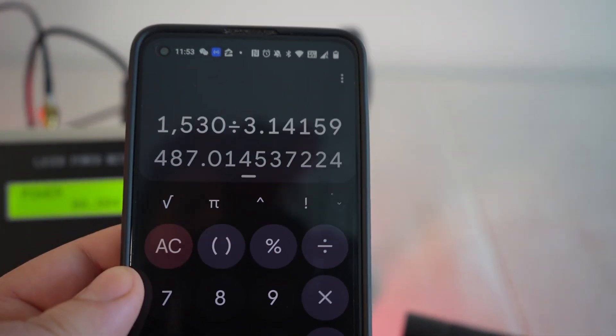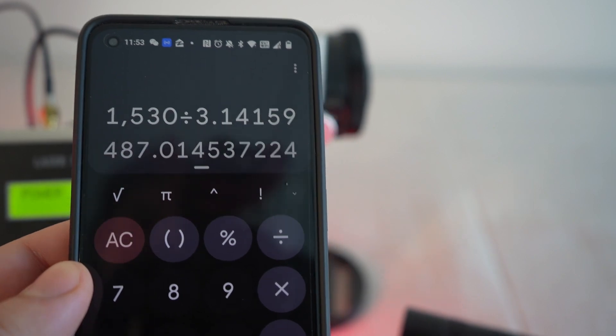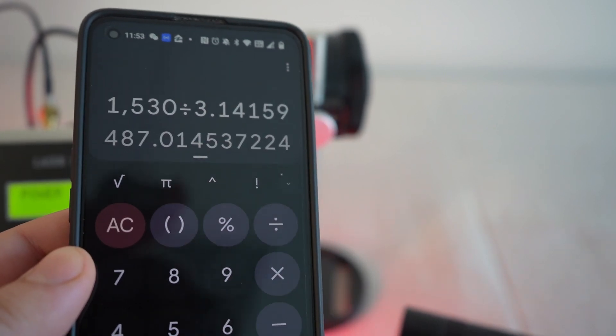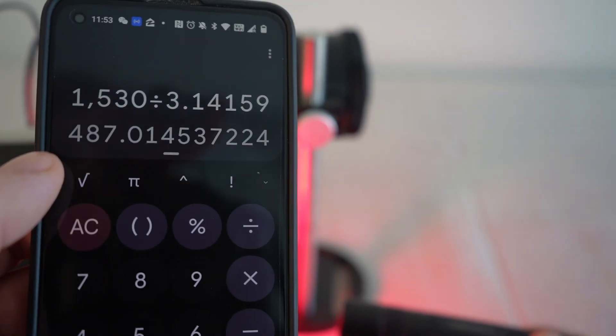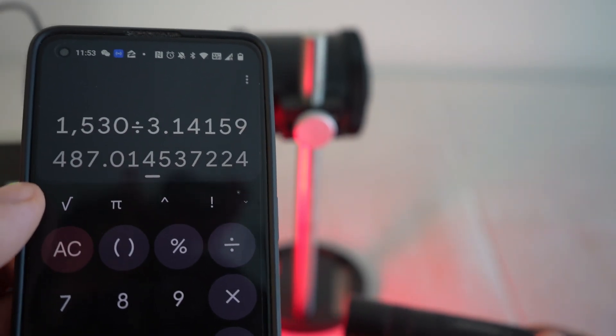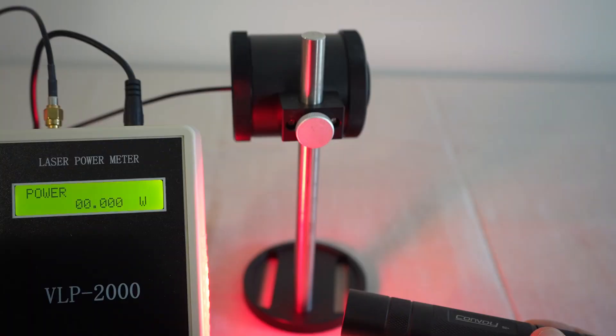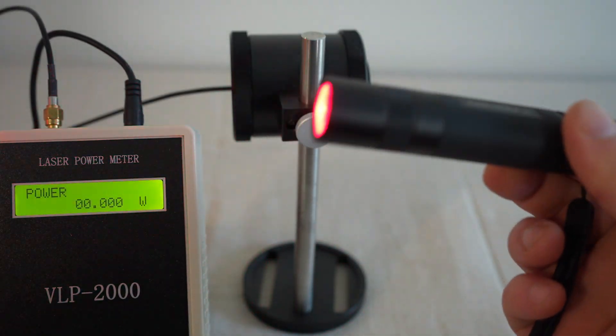And on that setting, we can calculate almost 500 milliwatts per centimeter squared, that is screeching high intensity, 487 milliwatts per centimeter squared to be exact. That's a very high intensity, again, just a single diode.